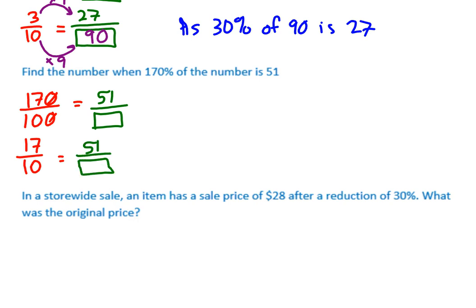Now, 17 times what equals 51? So you might realize already that it's 3. But if you didn't realize, you could just work it out on the side. What is 51 divided by 17? 51 divided by 17 is 3. So times by 3. 17 times 3 is 51. So that's a strategy. If you can't work out what you multiply both of them by, do 51 divided by 17. So 10 times 3 is 30. So our answer is 30.